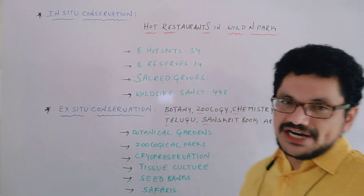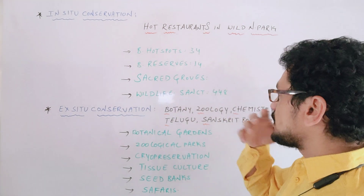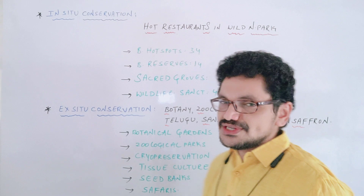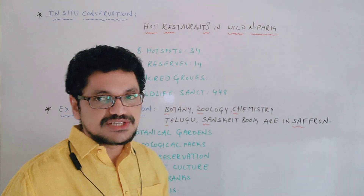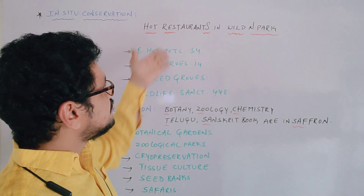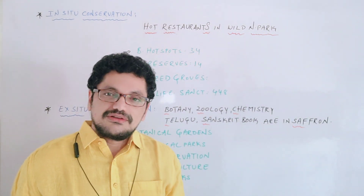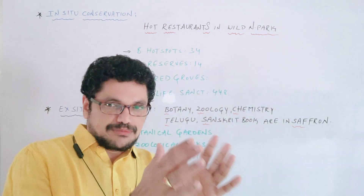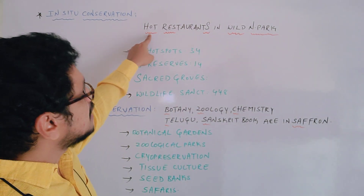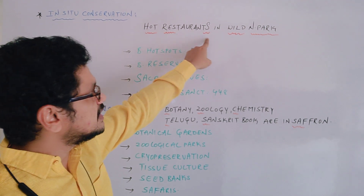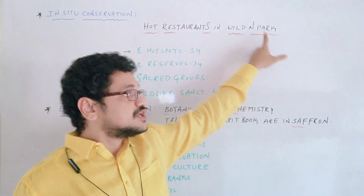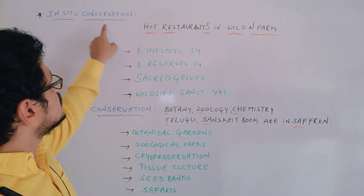We have 34 biodiversity hotspots. And of course biosphere reserves — 14 biosphere reserves. And sacral groves and wildlife sanctuaries: 448 wildlife sanctuaries. You can also add national parks — more than 19 national parks. So hot for biodiversity hotspots, restaurants for biosphere reserves, sacral groves, wild for wildlife sanctuaries, and national parks — these are all the categories which come under in-situ conservation.